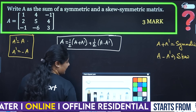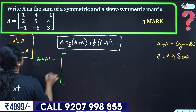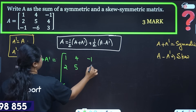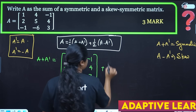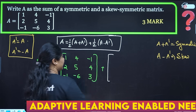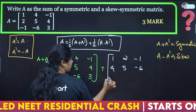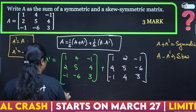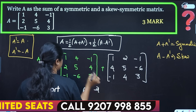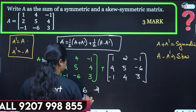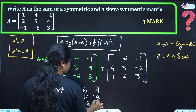Let's compute A plus A-transpose. The matrix A is [1, 4, minus 1; 2, 5, 4; minus 1, 2, minus 6; 3]. Adding A-transpose gives elements: 2, 6, minus 2; 6, 10, minus 2; minus 2, minus 2, 6 for the combined matrix.